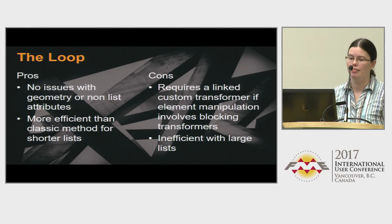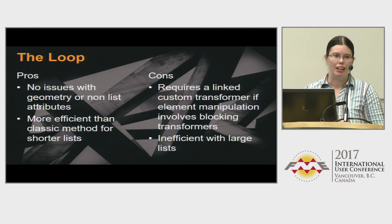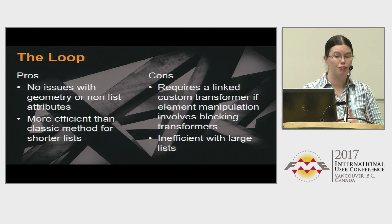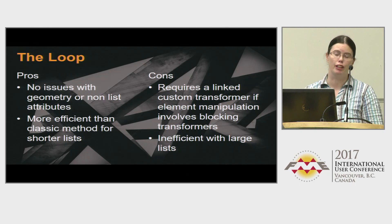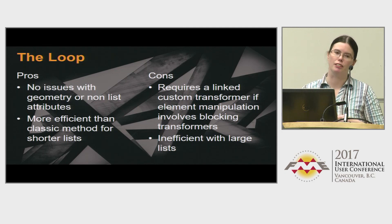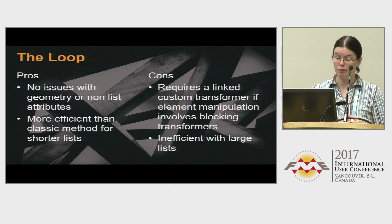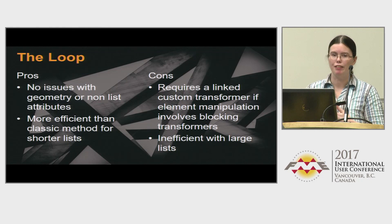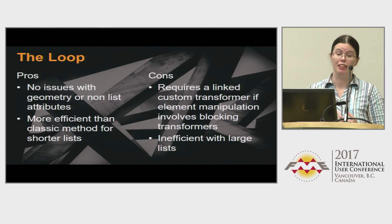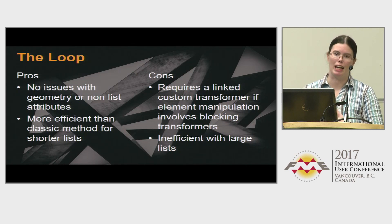The loop method has no issues with geometry or non-list attributes — whatever came into the loop will come out. It's more efficient than the classic method when you've got shorter lists: lots of features but only a few elements in the list. When you've got lots of elements on the list, it becomes very inefficient. The bad news is that if any of your processing requires a blocking transformer, you need a linked custom transformer, which becomes a lot harder to develop and see what's going on.